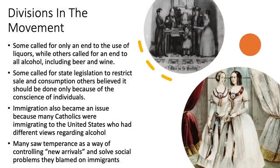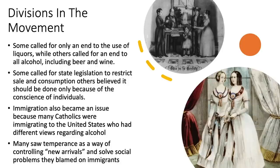As the movement grew, divisions appeared over key issues. Some groups called for only the end of liquor such as whiskey but not beer and wine, while others called for an end to all alcohol. Some called for state legislation — Maine banned manufacture and sale of alcohol in 1851 — while others believed temperance should be based on individual conscience. Immigration also became an issue, as many Catholics were immigrating: 250,000 in the 1830s, tripling to 750,000 in the 1840s. Many who supported temperance saw the movement as a way to control these new arrivals and solve problems they blamed immigrants for, such as crime, poverty, and job loss.